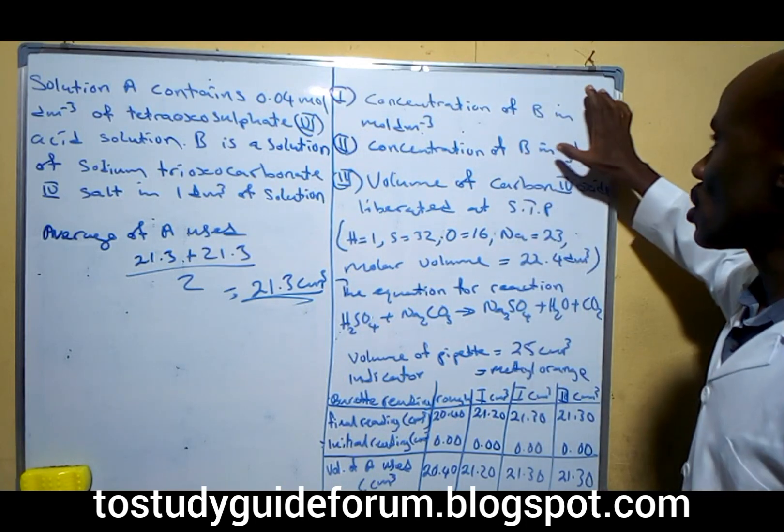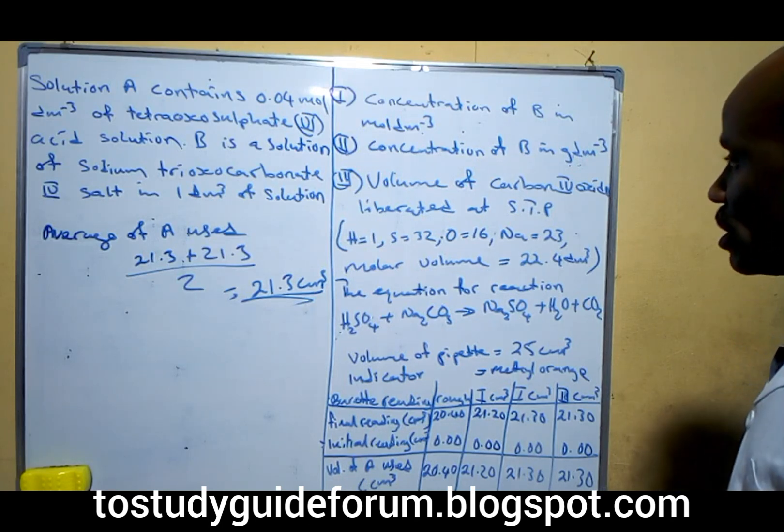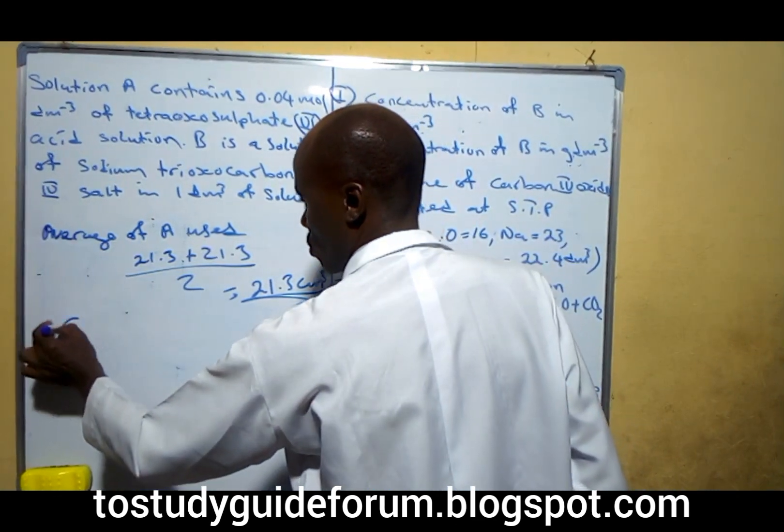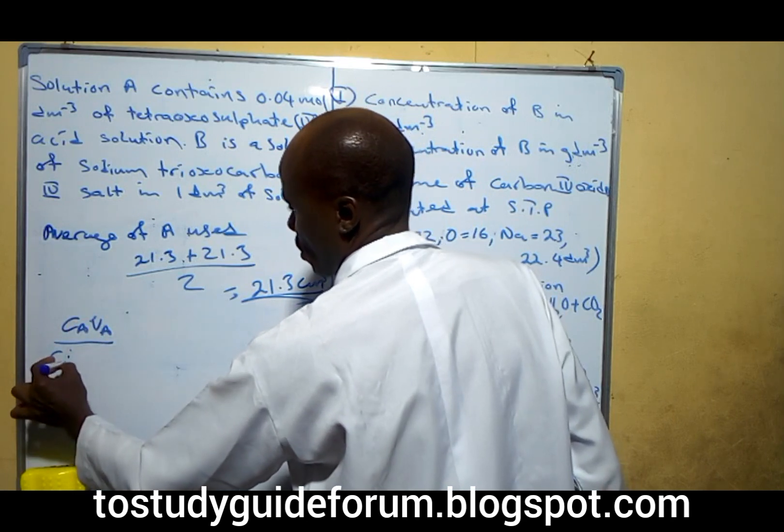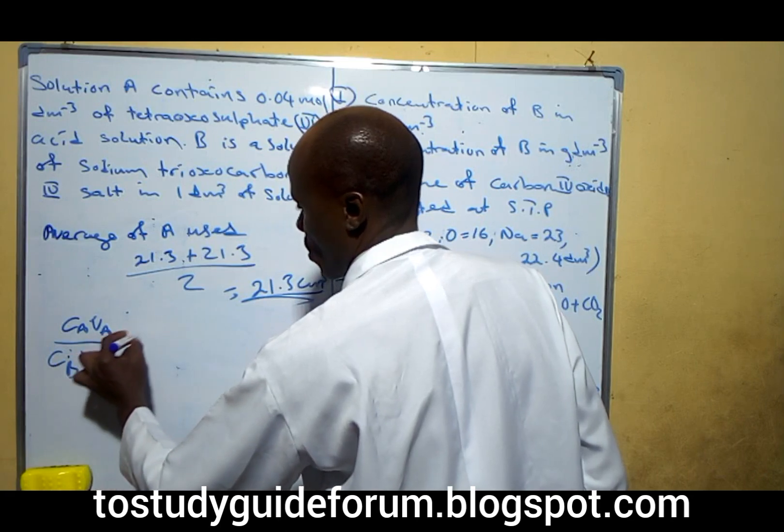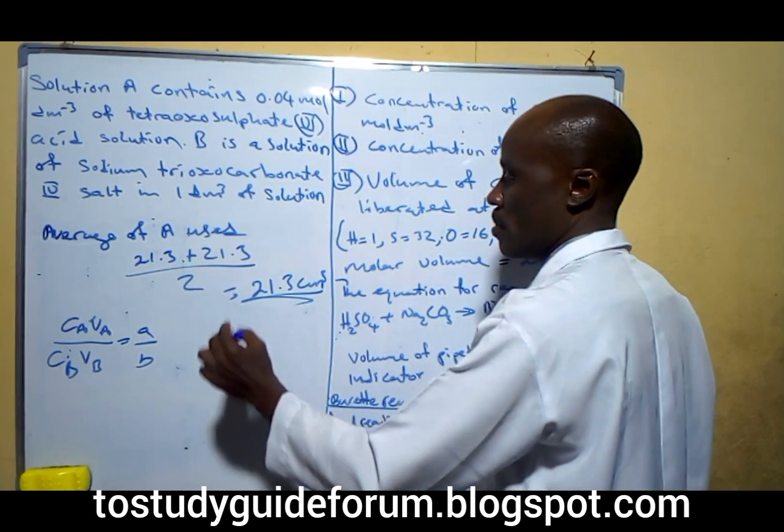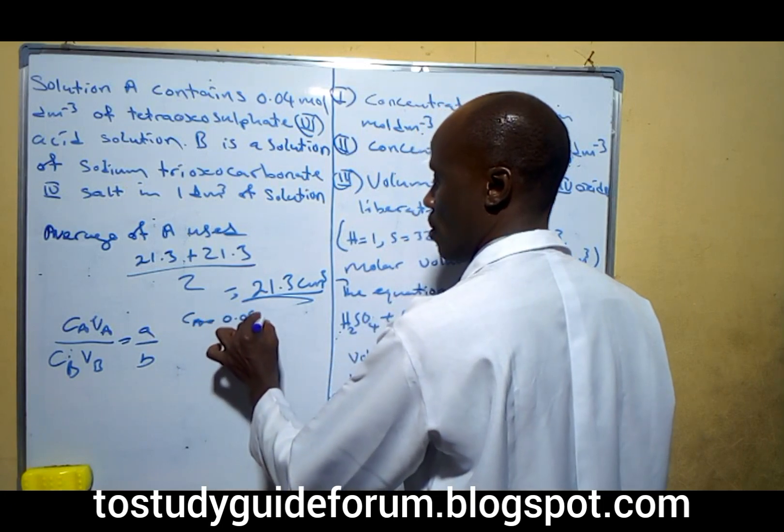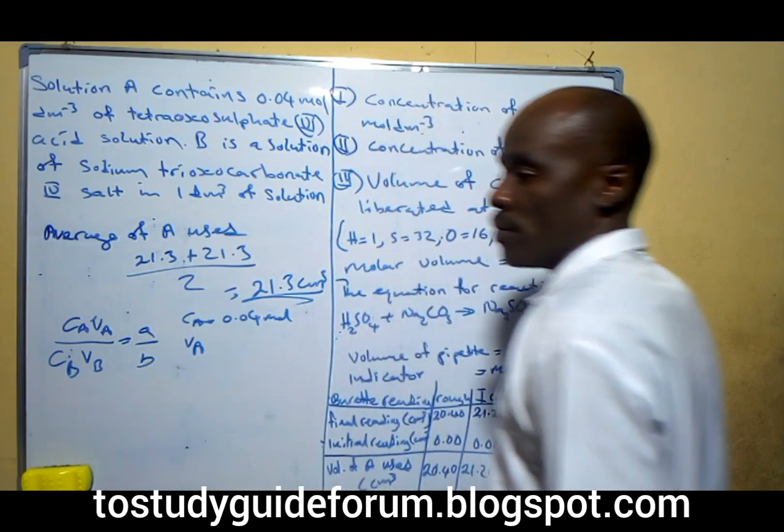From the results received, the information says we should calculate the concentration of B in moles per dm³. To do this, we're going to use our relation CA VA over CB VB equals to A over B.